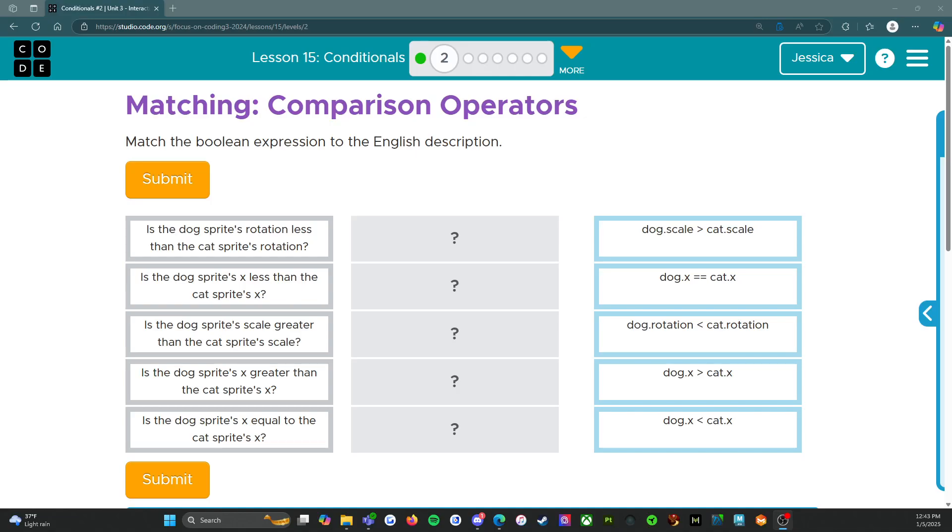Hello, everybody. Welcome back. We are on level two of lesson 15 with conditionals. So level two is actually just matching what looks like vocabulary, matching a Boolean expression to the English description.